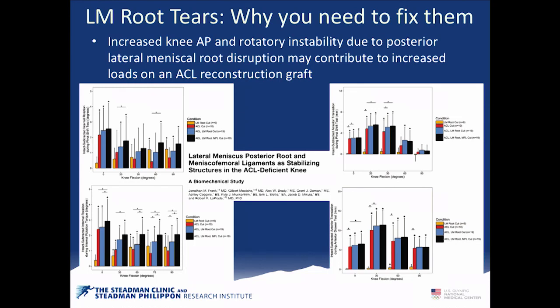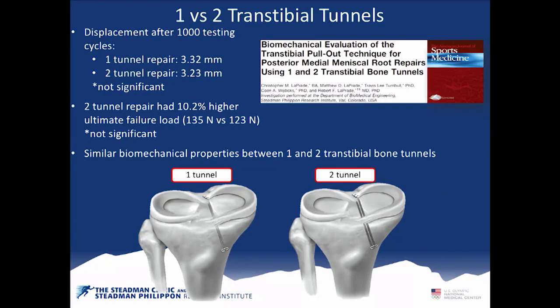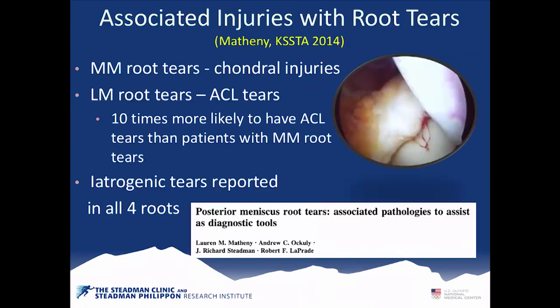When you do see these root tears they cause increased load on the joint that could cause it to stretch out. We also looked at one versus two tunnels. With one tunnel on second-look scopes, we found it tends to pooch the meniscus down. We developed a technique using two tunnels to pull it down more anatomically, and found it's basically the same biomechanically, but the increased healing is significantly improved on MRI scans.